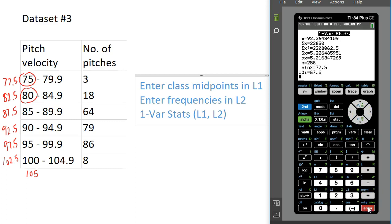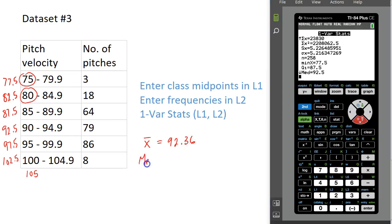We can see that the mean pitch velocity was about 92.36 miles per hour. And if I go down, I see that the median is 92.5 miles per hour.